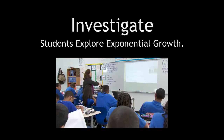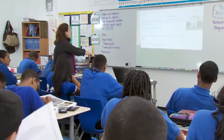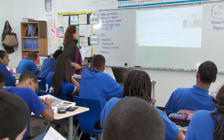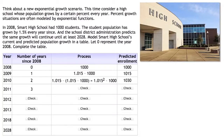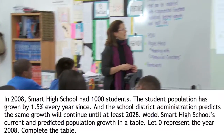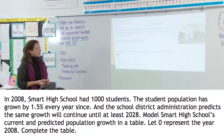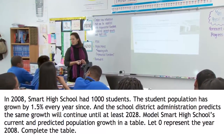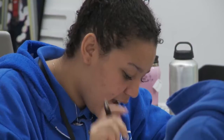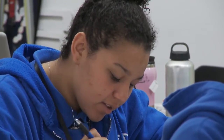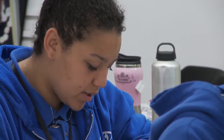This is really an amazing opportunity to bring together everything that we've been learning and to reinforce concepts. Smart High School. I would like someone to read the problem situation. Georgette, take it away. In 2008, Smart High School had a thousand students. The student population has grown by 1.5% every year since, and the school district administration predicts the same growth will continue until at least 2028.